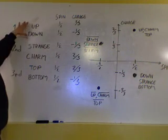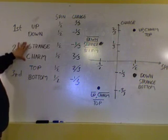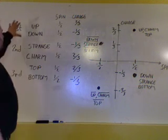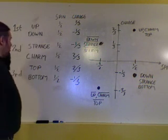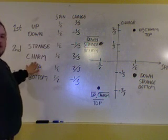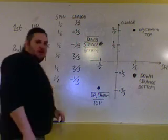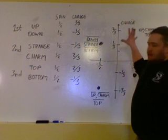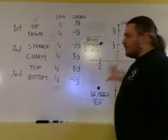Here's my first generation, my up and down, my second generation, strange and charm, my third generation, top and bottom. And the reason why we call it the first, second, and third is because first generation tends to live longer, second generation intermediate, and then third, it's very hard to keep those around for any length of time. So that's the basic structure of charge.